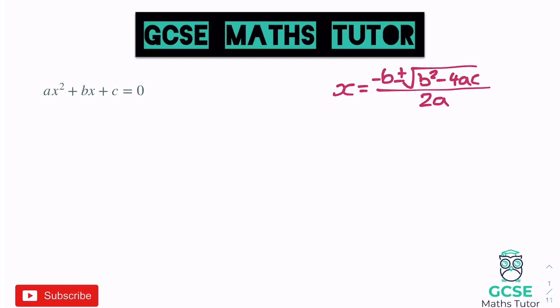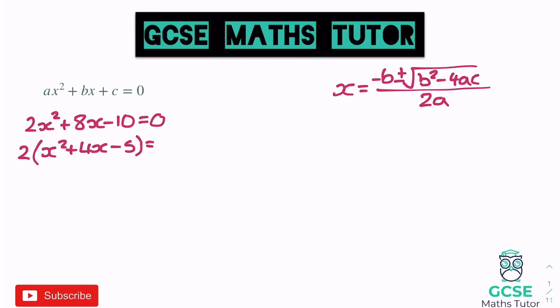The first step is to make x the subject — on the right we've only got one x, but on the left we've got an x squared and an x. Completing the square will allow us to get rid of that x squared. I'll link this to a normal question: something like 2x² + 8x − 10 = 0. To complete the square, first we get rid of the coefficient of x squared by dividing everything by 2. We take a 2 out of the bracket, giving x² + 4x − 5 = 0.